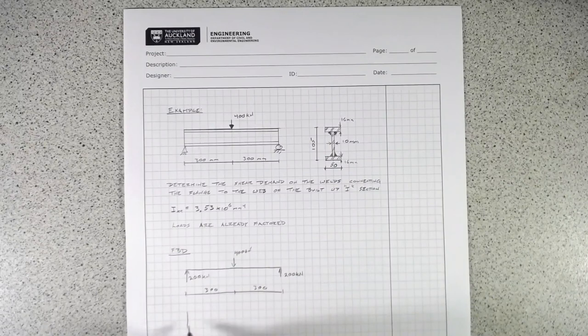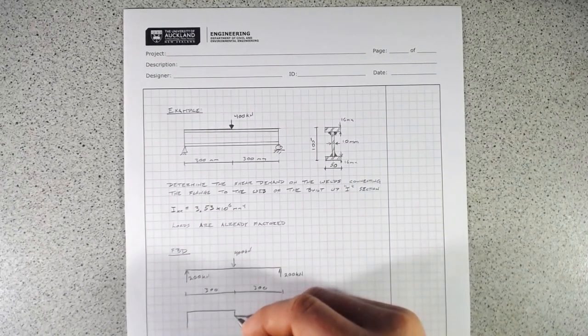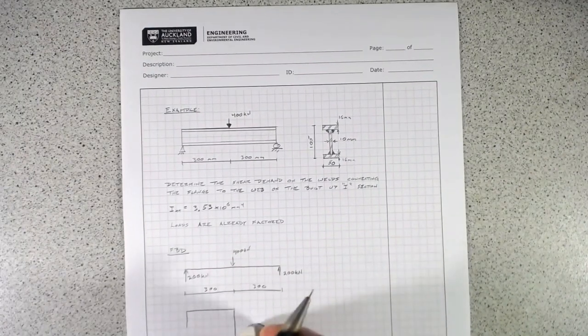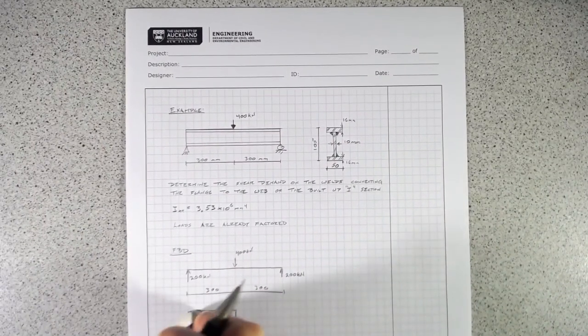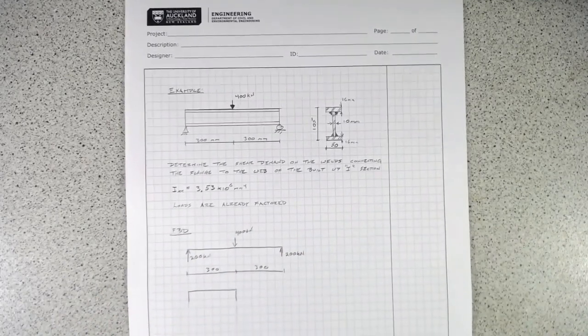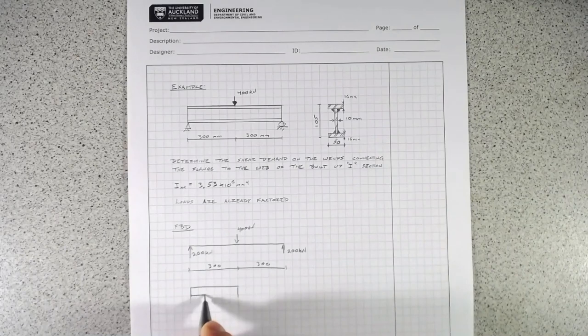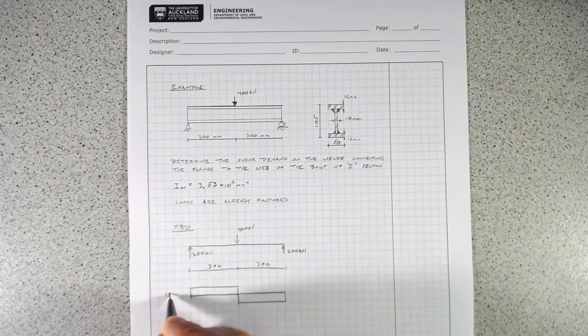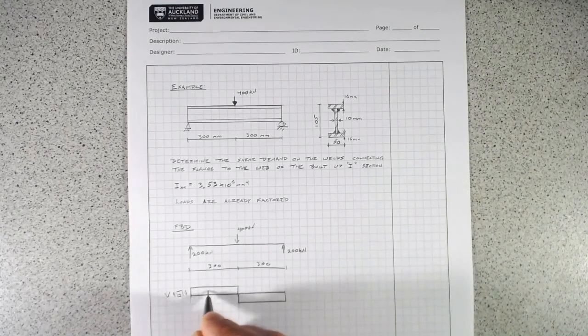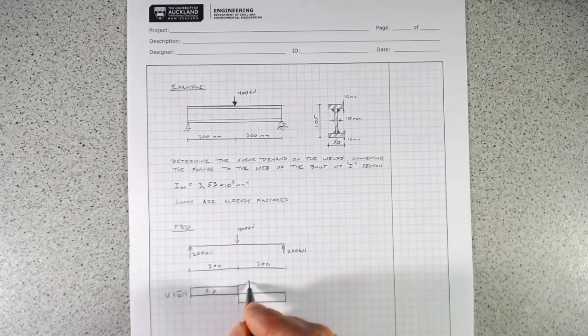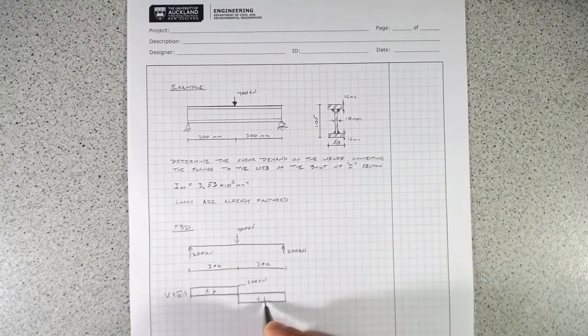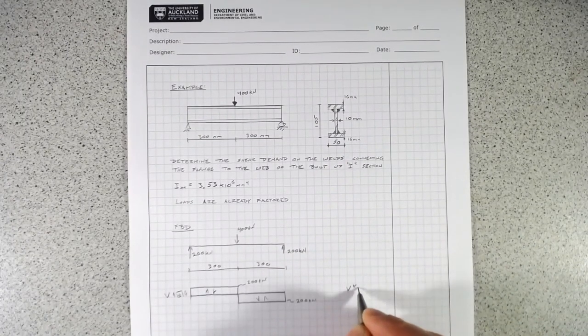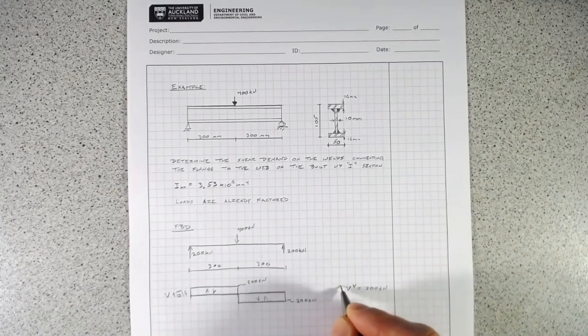That means we can draw our shear and bending moment diagrams. We'll draw this just a little bit shallower to save space on our calculation sheets. We'll have a constant shear coming across the section. So if that's our shear diagram, that value will be 200 kilonewtons, and that value will be 200 kilonewtons. So V star, our shear demand, is 200 kilonewtons.